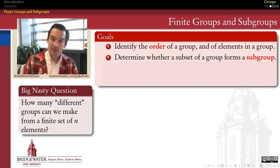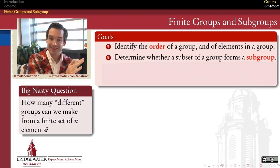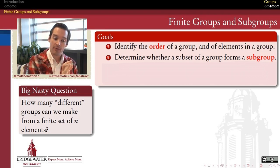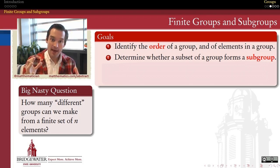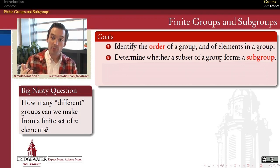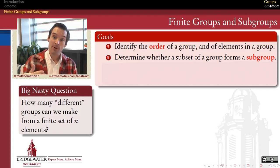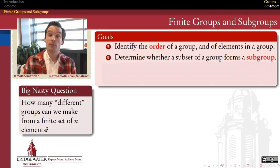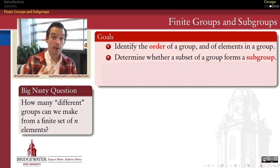In the process of defining order, we looked at the powers of one single element in a group. When you look at the set of powers of one element and consider that as a subset of our larger group, it turns out that that subset also enjoys the properties of a group: associativity, the closure property, the identity property, the inverse property. So that subset of elements is a group in its own right. We call that kind of phenomenon a subgroup.